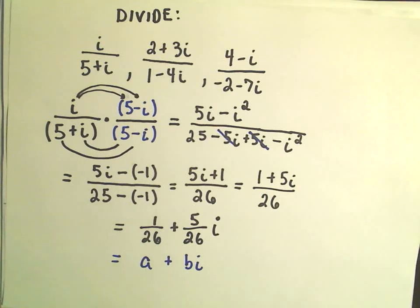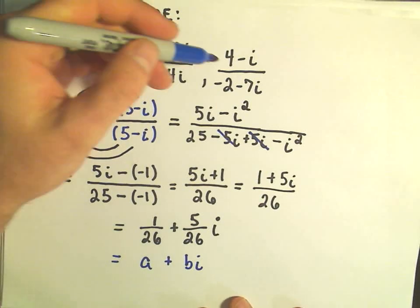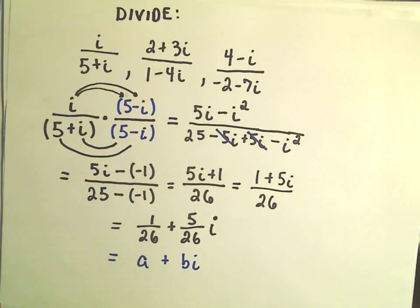So that's the basic idea. Again, just multiplying by the conjugate. In another video, I'm going to do these other two examples, same process, multiplying by the conjugate of the denominator, simplifying, and that's it.